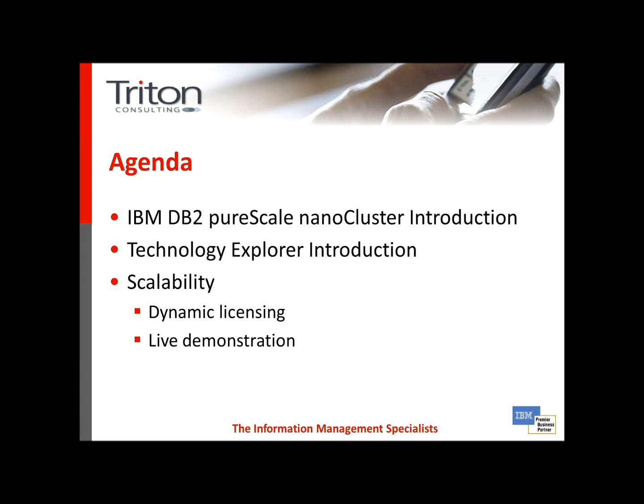We'll start off by talking about the PureScale nanocluster, which has been produced by IBM as a demonstration platform. Then we'll move on to a brief overview of the Technology Explorer, which we're using as part of the nanocluster delivery to show what workloads are going on and what the status of various components of the cluster are. We'll talk about scalability in terms of dynamic licensing and why that may be important for your business, and then move on to a live demonstration of how dynamic licensing and the flexibility it brings may be useful in dealing with your spikes and peaks on demand.